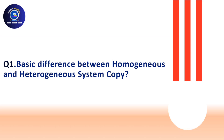The first question is the basic difference between homogenous and heterogeneous system copy. System copy generally means you're building a new system from an existing system — suppose you have a quality system and want to create a replica. Homogenous versus heterogeneous is determined based on the OS and database. If your OS is changing from Linux to AIX or your database is changing from Oracle to HANA or Sybase to MaxDB, that is a heterogeneous system copy, which is more critical. If source and target have the same OS and database, that is homogeneous.